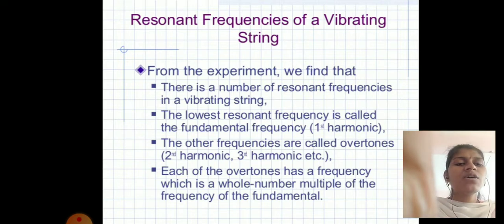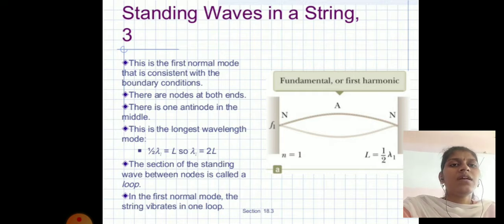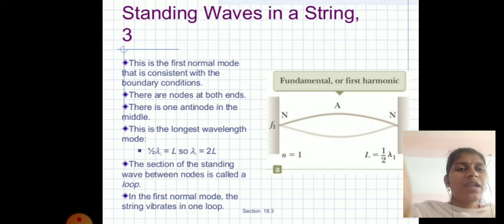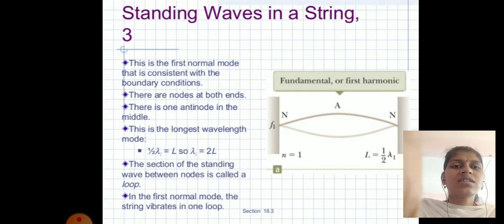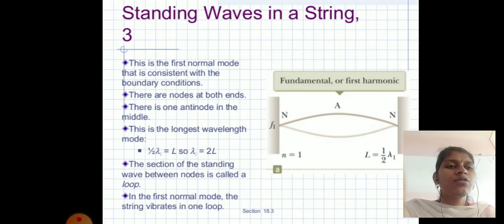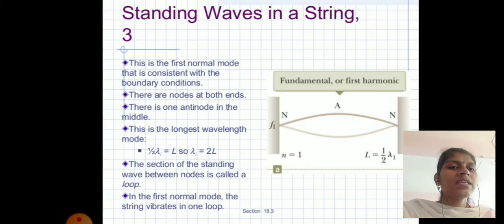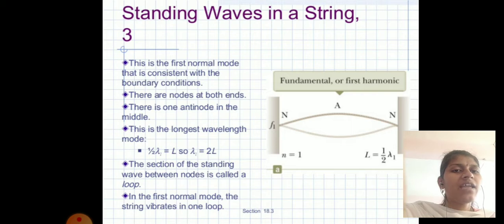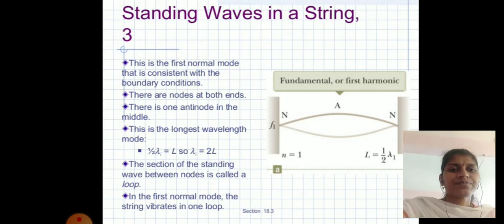Each of the overtones has a frequency which is a whole-number multiple of the fundamental frequency. In the first normal mode, there are nodes at both ends and one anti-node in the middle. This is the longest wavelength mode: one half of λ₁ equals L, so λ₁ = 2L. The section of a standing wave between nodes is called a loop.